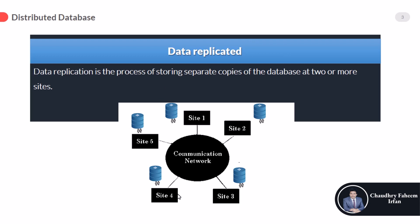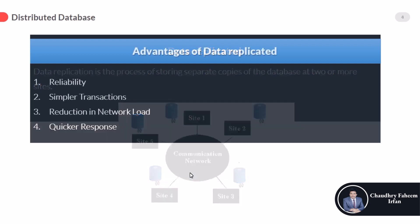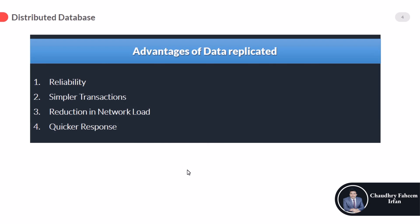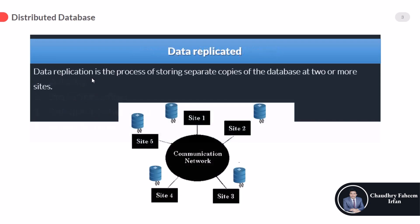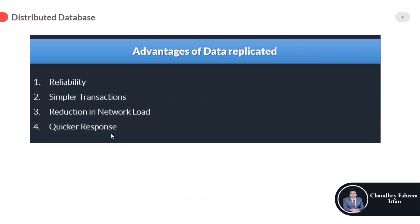At site one, the whole database and whole DBMS is present, and at sites two, three, four, and five the condition is similar. Here are some advantages of data replication. First is reliability — if any site is damaged, you can access data from another site. For example, if site one's database is damaged, you can access it from site four.